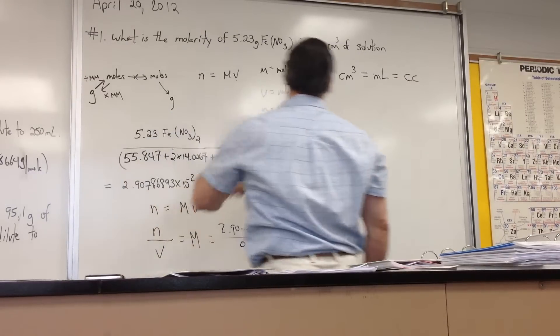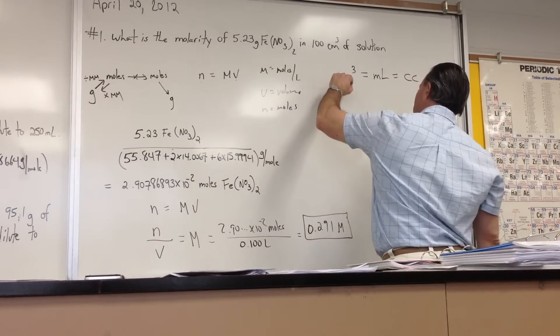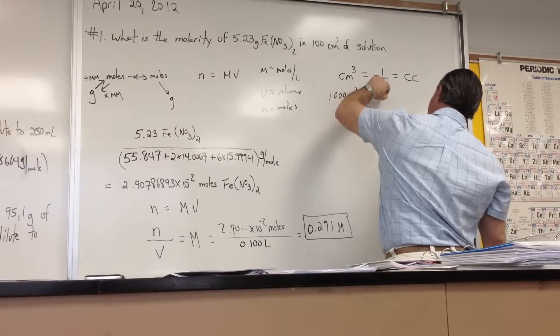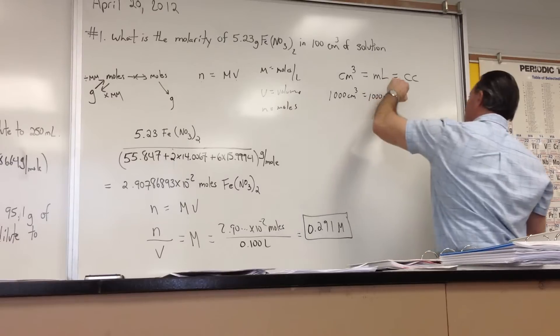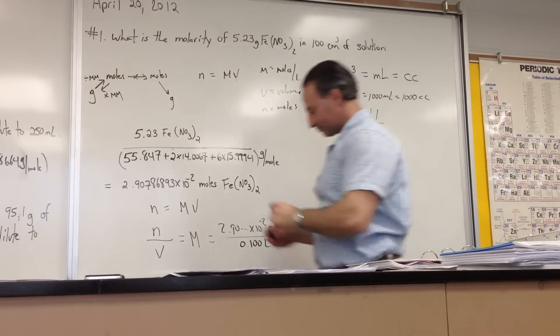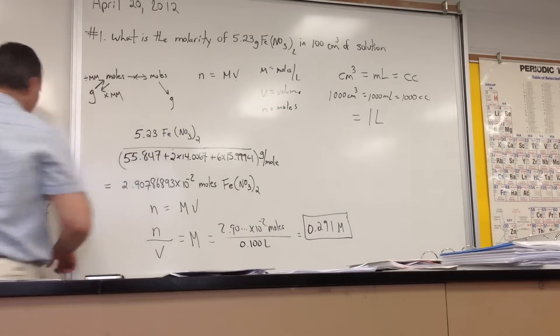There are 1,000 centimeters cubed, and there are 1,000 mLs, and there are 1,000 cc's in one liter. So, recognize that when you see it.